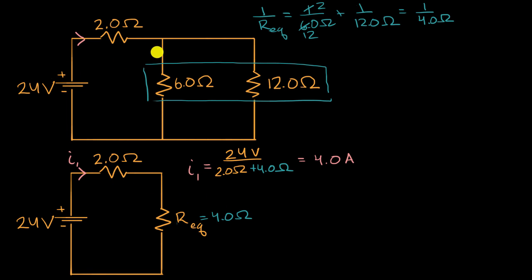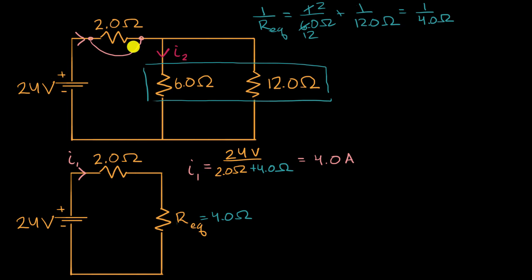Now how do we use that information to calculate the current through the six ohm resistor — I sub two? One way to think about it is: what is the voltage drop across the parallel section? If we know the total voltage drop and the drop across the first resistor, we can figure out the voltage drop across the parallel resistors.